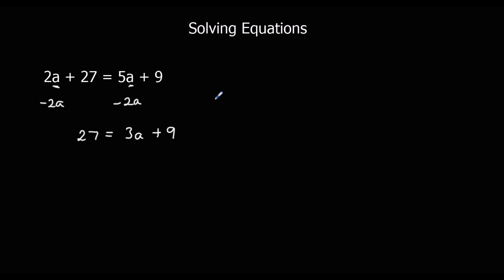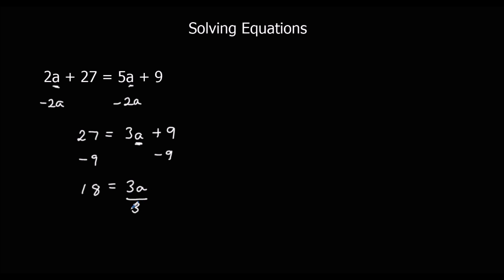That's simplified our equation. We need to keep going. We want to find 'a' by itself, so we get rid of the plus 9 by taking 9 away from both sides. 27 minus 9 is 18, and the 9s cancel out leaving 3a. So 3a equals 18. Divide by 3 to get 1a, and 18 divided by 3 is 6. So a equals 6.